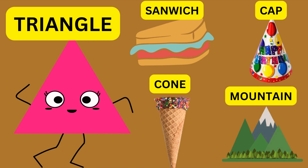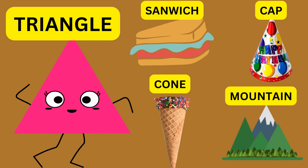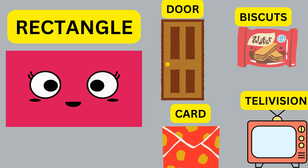Triangle. Sandwich — triangle. Cape — triangle. Corn — triangle. Mountain — triangle.